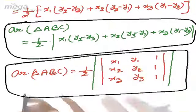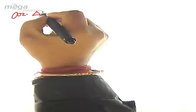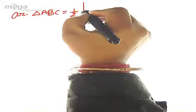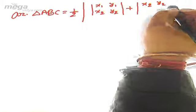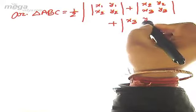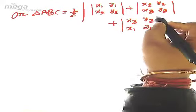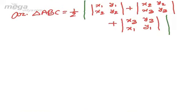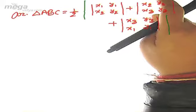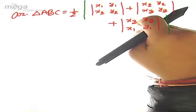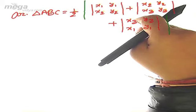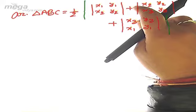A third form: Area of triangle ABC = ½ × |det(x1,y1; x2,y2) + det(x2,y2; x3,y3) + det(x3,y3; x1,y1)|. We start from the first coordinate, cycle through all vertices using 2×2 determinants, and end back at the first coordinate. This cyclic pattern helps with memorization.